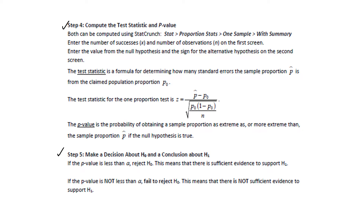Step 4: compute the test statistic and the p-value. We're going to compute both using StatCrunch in one step — Stat, proportion stats, one sample with summary. On the first screen, we'll enter the number of successes x and the number of observations n, then enter the value from the null hypothesis and set the sign for the alternative hypothesis. The test statistic is a formula for determining how many standard errors the sample proportion p-hat is from the claimed population proportion p sub zero. The numerator finds how far apart they are, divided by a square root that gives a standard error for this distribution.